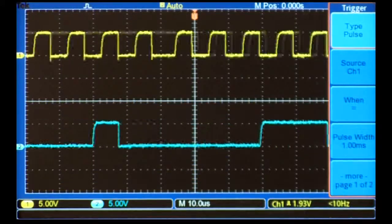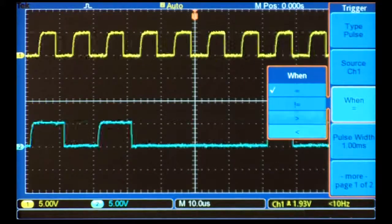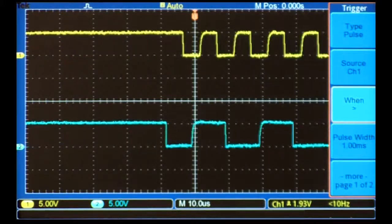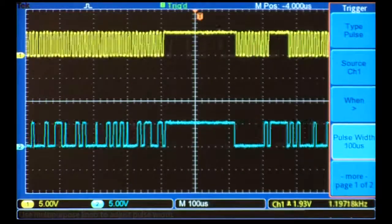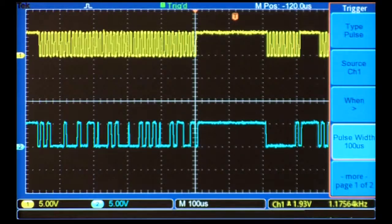I'll set the scope to capture a positive pulse greater than 100 microseconds. By using pulse width triggering, I'm able to consistently capture signal information that occurs at the beginning of packets.